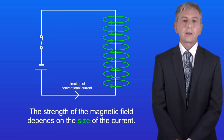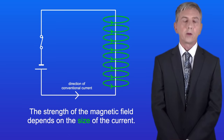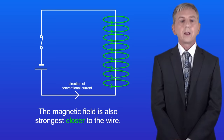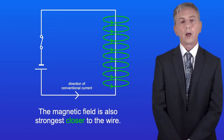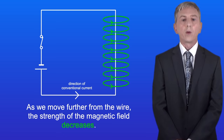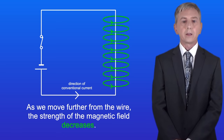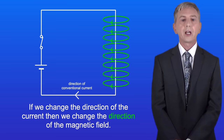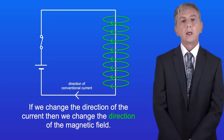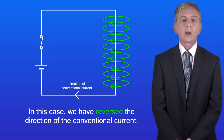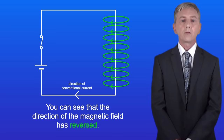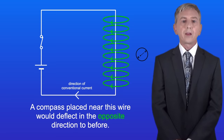The strength of the magnetic field depends on the size of the current — a larger current produces a stronger magnetic field. The magnetic field is also strongest closer to the wire; as we move further from the wire the strength of the magnetic field decreases. If we change the direction of the current then we change the direction of the magnetic field. So if we reverse the direction of the conventional current, the direction of the magnetic field also reverses, and a compass placed near this wire would deflect in the opposite direction to before.